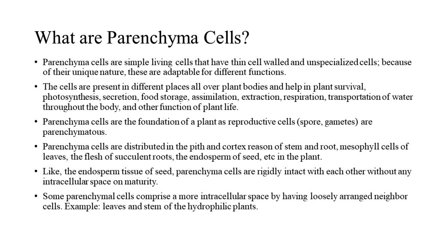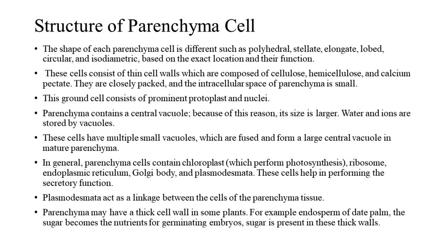Like the endosperm tissue of seeds, parenchyma cells are rigidly intact with each other without any intercellular space on maturity. Some parenchymal cells comprise more intercellular space by having loosely arranged neighboring cells — for example, leaves and stems of hydrophilic plants. The shape of each parenchyma cell differs, such as polyhedral, stellate, elongate, lobed, circular, and isodiametric, based on the exact location and their function.